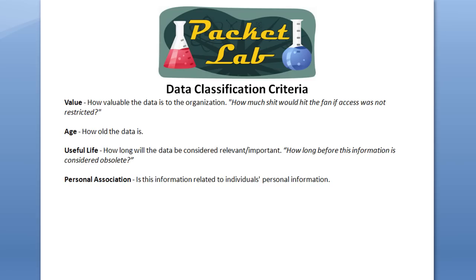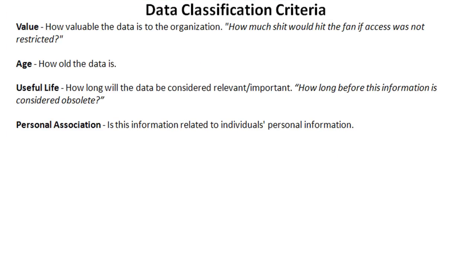We took a look at data classification and a couple of data classification structures, so now we're going to go quickly over the data classification criteria. The first of these criteria is value — how valuable the data is to the organization, or to paraphrase, how much would go wrong if this was not restricted. This is your most important criteria because it maps directly to the sensitivity value you're using to classify your data in the first place.